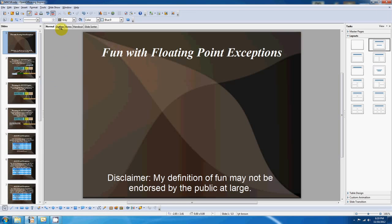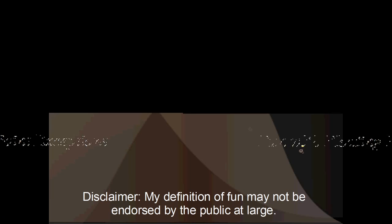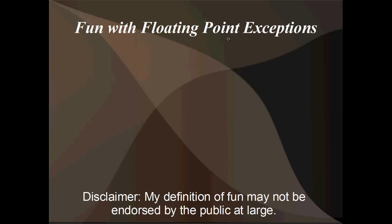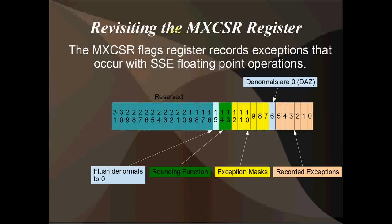Hello everybody, welcome to another tutorial. Today we're going to have some fun with floating point exceptions, which means we're going to be looking at the MXCSR register. This is the Multimedia State flags register, and it records exceptions that occur with SSE floating point operations.